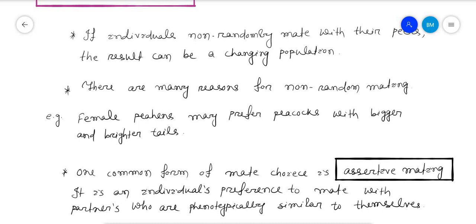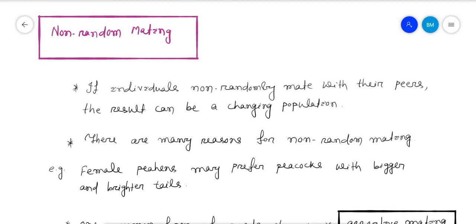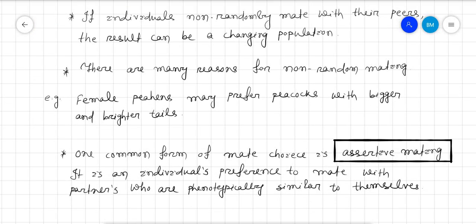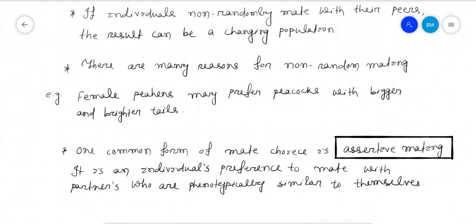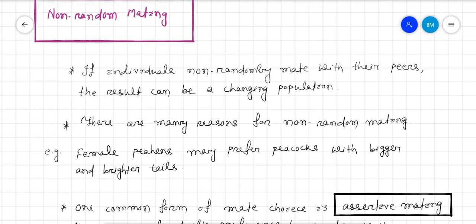This is all about non-random mating, which leads to evolution. You can pause the video if needed. This is one of the causing factors for evolution. I hope you're clear now. Thank you for watching. Bye.